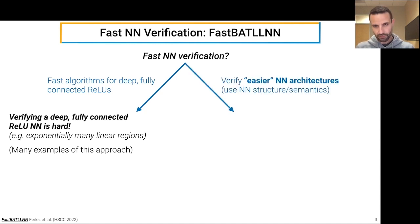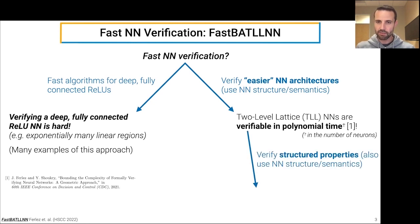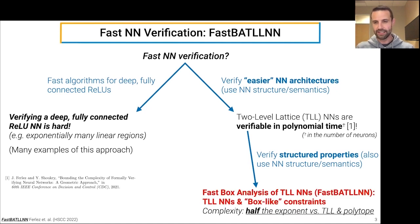So an approach we've been taking is to instead consider particular neural network architectures that allow us to use their structure and semantics to make the verification problem easier. So one example of this is some of our prior work where we showed that two-level lattice neural networks are verifiable in polynomial time, at least in the number of neurons. So the current work extends this idea by considering not just particular neural network architectures, but particular properties that allow us to further exploit the structure and semantics of the architecture to obtain yet faster neural network verifications. And that's what FastBATLLNN is about.